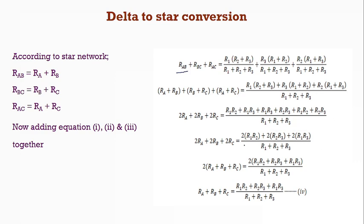So on simplifying this expression, we are getting the equation as RA plus RB plus RC is equal to R1 R2 plus R2 R3 plus R1 R3 divided by R1 plus R2 plus R3. Let it be equation number 4.